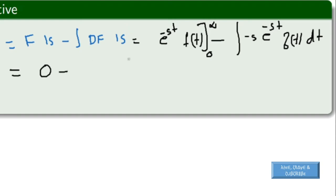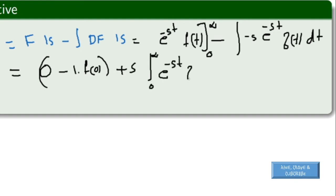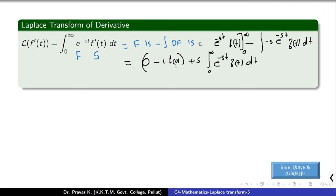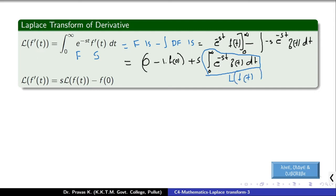When we substitute infinity, e^(−∞) is 0, so that part is 0. When we substitute 0, we get 1 · f(0). In the second part, taking −s outside, we get +s times the integration from 0 to infinity of e^(−st) f(t) dt, which is precisely the Laplace transform of f(t). Therefore, L{f'(t)} = s · L{f(t)} − f(0).